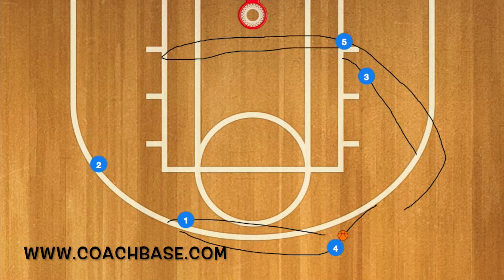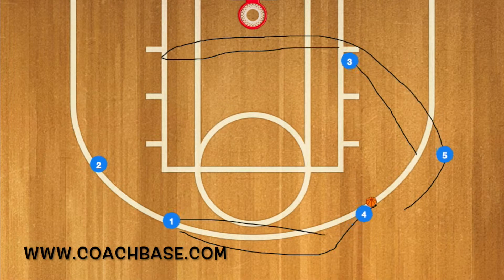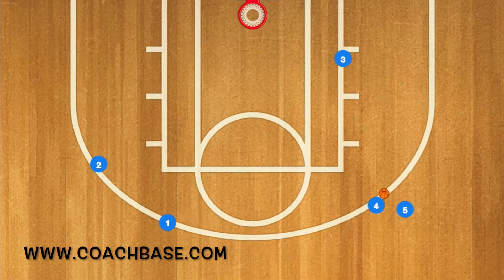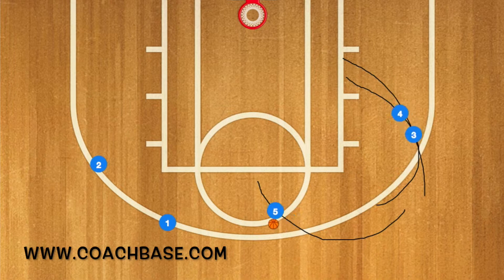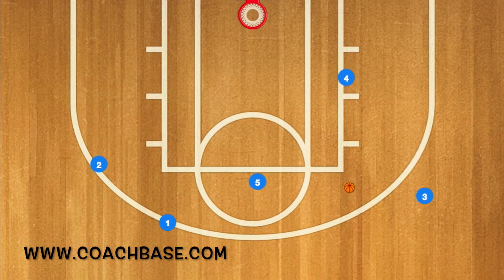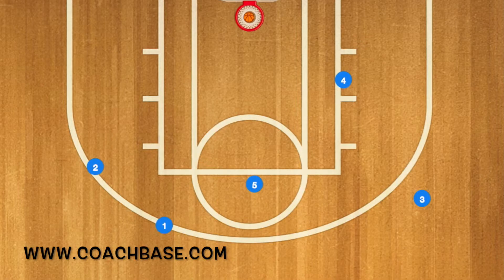Five is going to go to the opposite post and come back and use three as a screen, and then four is going to pass the ball to five. Five is going to drive towards the key and four is going to set a screen for three. Five will then pass to three, and three will score.